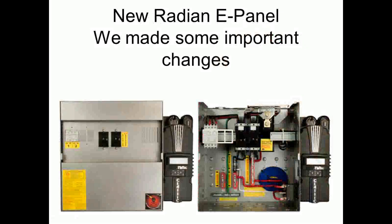Here is our Radian e-panel. We actually developed this years and years ago before the Radian was on the market because we were heavily involved in the design of the Radian inverter itself. This one has some advantages over the actual Outback version — the prototypes for this were sitting in the Outback engineering department for years. It doesn't have some of the shortcomings of the Radian e-panel made by Outback, costs a little bit less, and we do them pre-wired, both in a single and a dual.